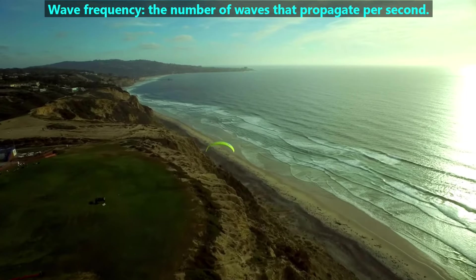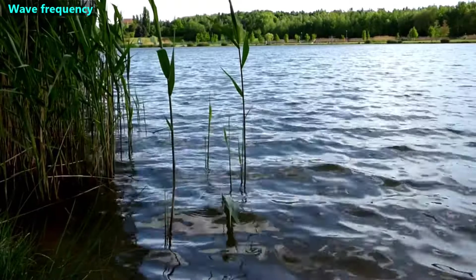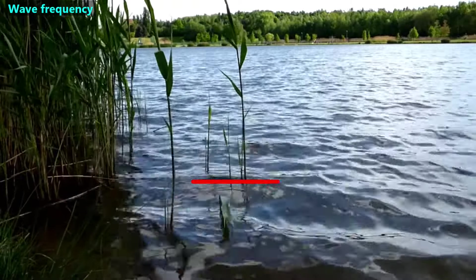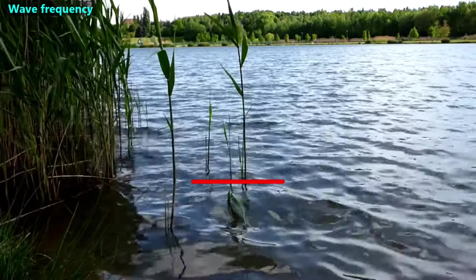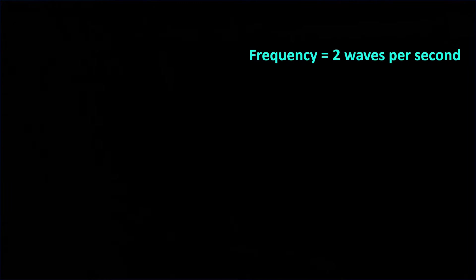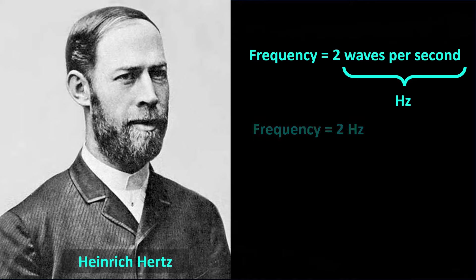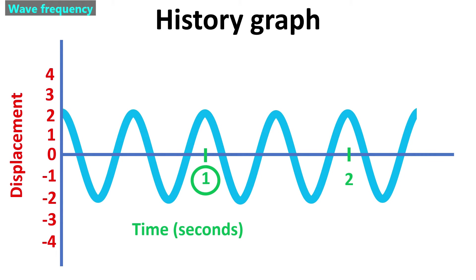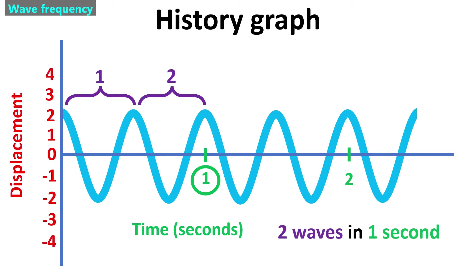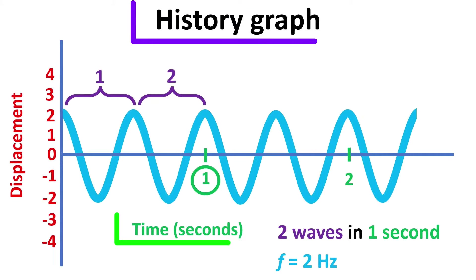Next, we'll discuss wave frequency. Wave frequency is the number of waves that propagate per second. To measure a wave's frequency, we count how many waves propagate in a second. We'll use this stem as a reference point. There are two waves that pass this stem every second, so the wave frequency is two waves per second. Instead of saying the phrase waves per second, we use the term Hertz — named in honor of Heinrich Hertz, who discovered radio waves. We typically use a lowercase f to represent frequency. This is a history graph of the lake waves passing the stem. It shows that every second, two waves pass the stem. We use a history graph like this to analyze a wave's frequency. Please note that instead of distance on the x-axis as with a snapshot graph, we've written time on the x-axis.